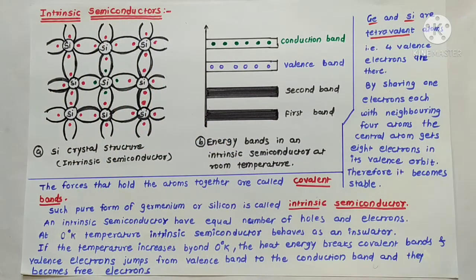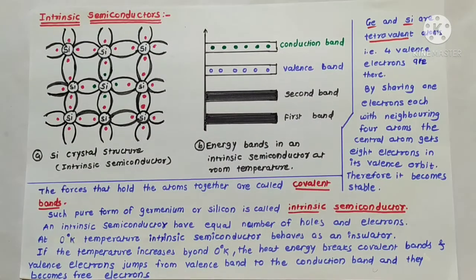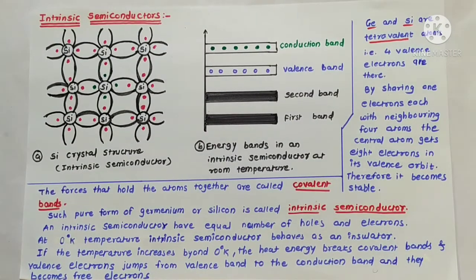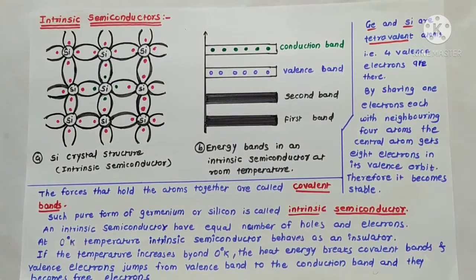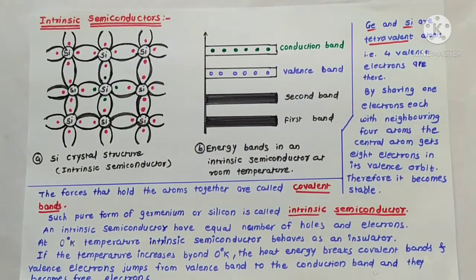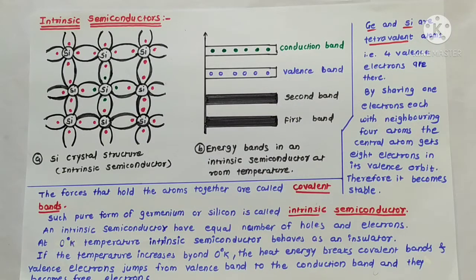What is meant by intrinsic semiconductor? Intrinsic semiconductor means the semiconductor in pure crystal form, without any mixing of other substances. For example, silicon and germanium atoms.